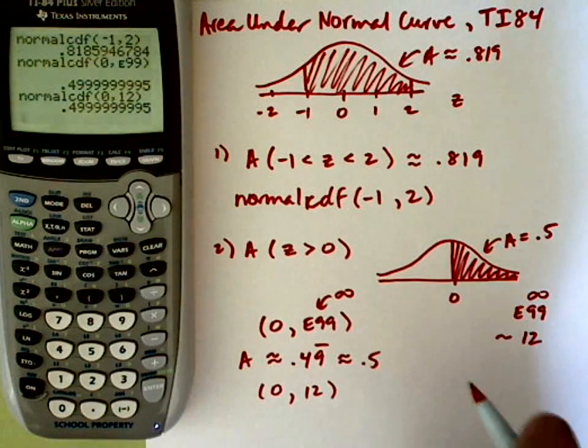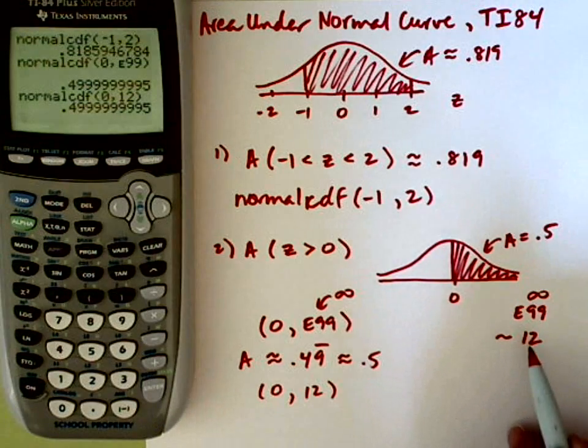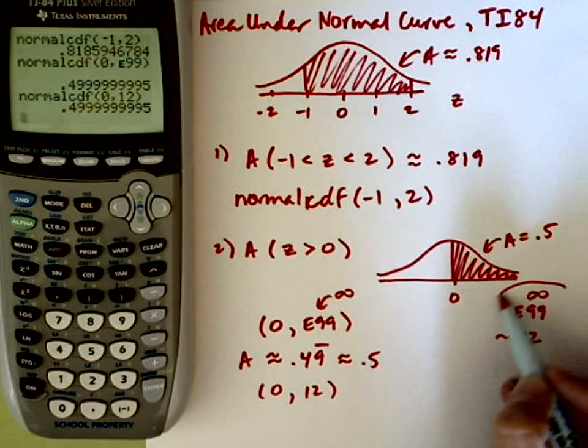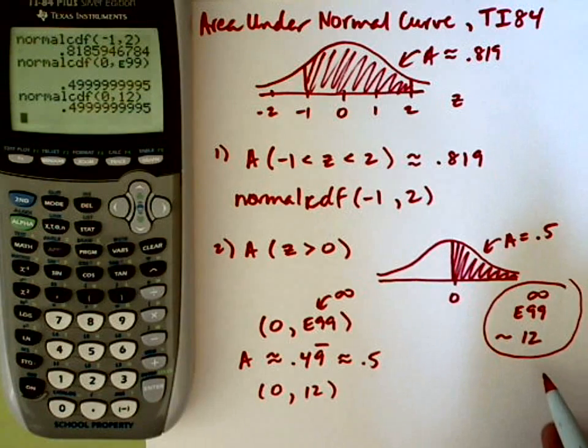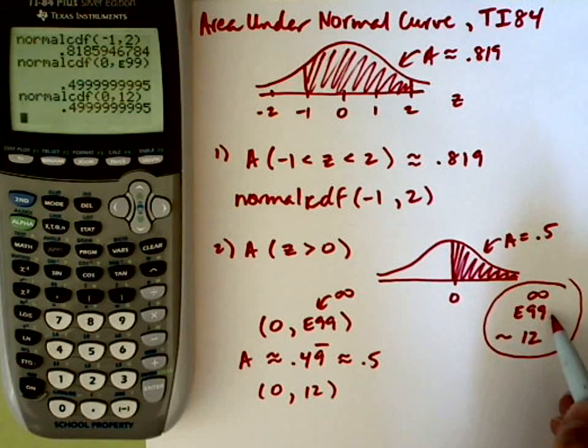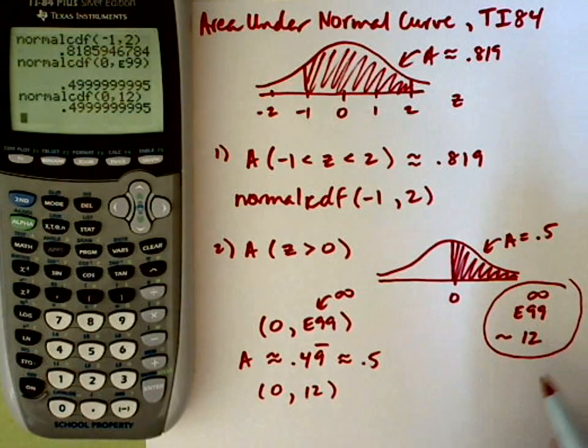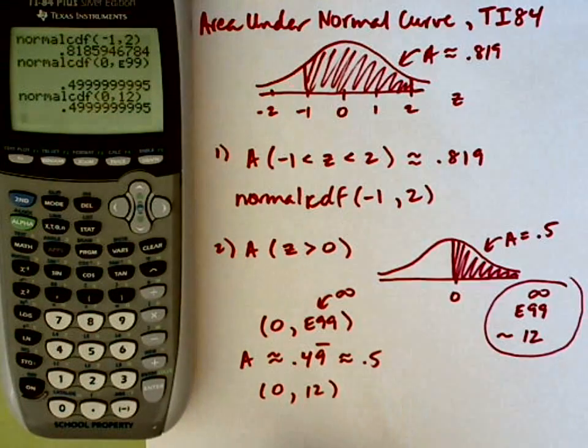So now I've got 0 comma 12. I hit enter, it gives me exactly the same thing. So when you're looking for a very large z-score, whether you're on the right or on the left, you can use the e99, or you can just use a relatively large z-score, which would be something like 12.